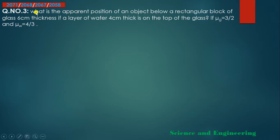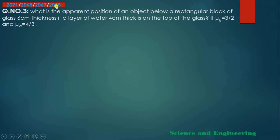Question 3: What is the apparent position of an object below a rectangular block of glass of thickness 6 cm, if a layer of water 4 cm thick is on top of the glass? Given: mu of glass (μg) = 3/2 and mu of water (μw) = 4/3. The object is below the rectangular glass block of 6 cm thickness, and water of 4 cm thickness is on top.